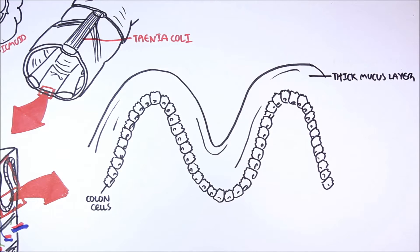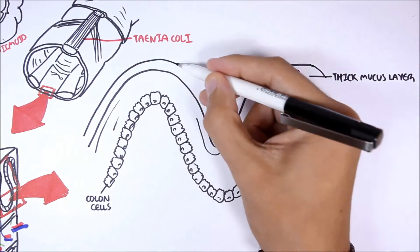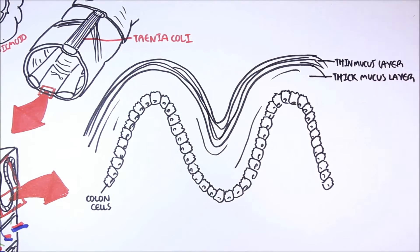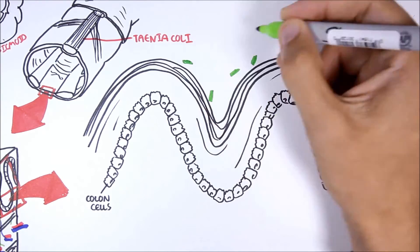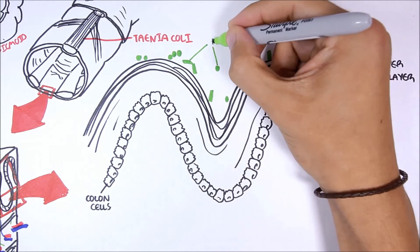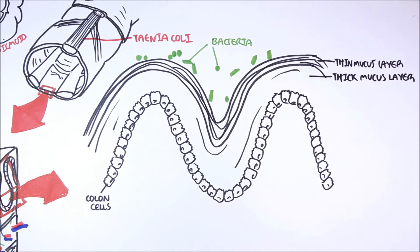In the colon, there is a relatively thick mucous layer and then a thin mucous layer on top of that. Residing above the mucous and within the lumen are bacteria. These bacteria are called the gut microbiota. Humans and their gut microbiota have a symbiotic and mutualistic relationship.